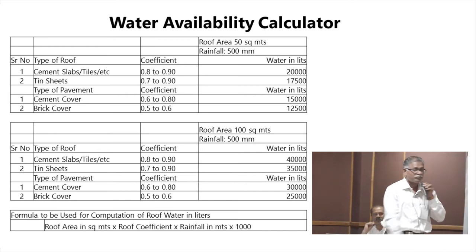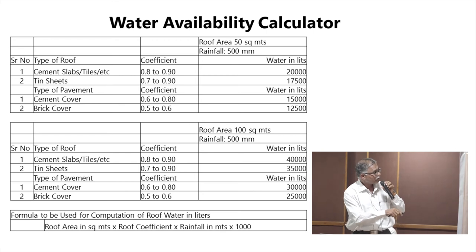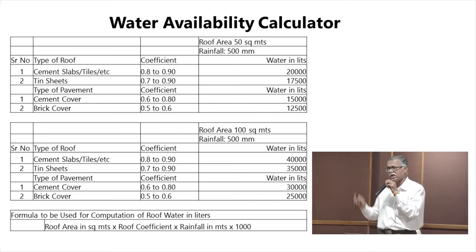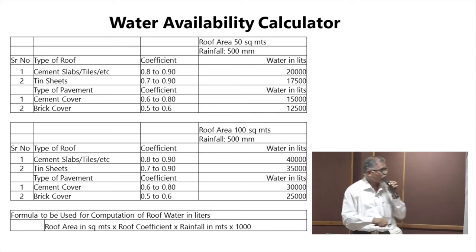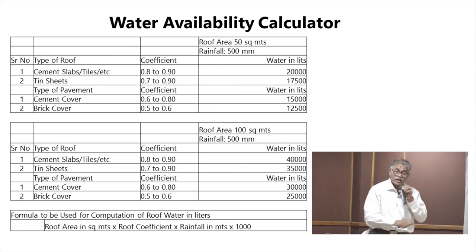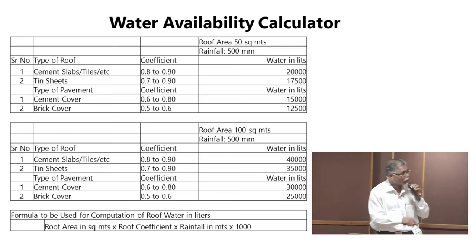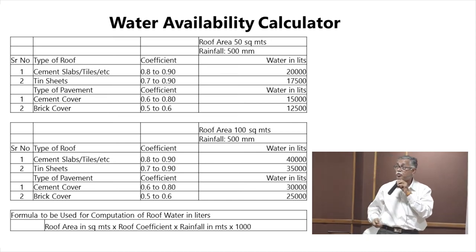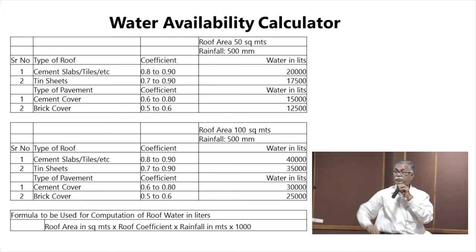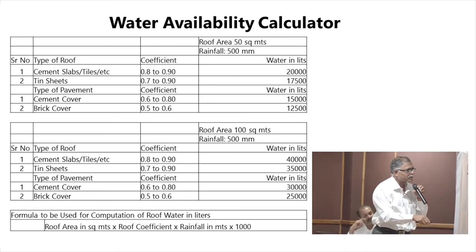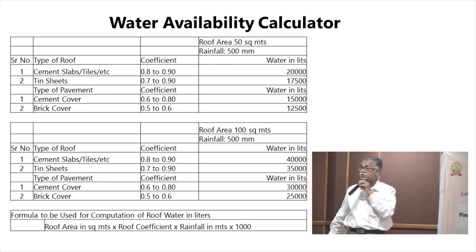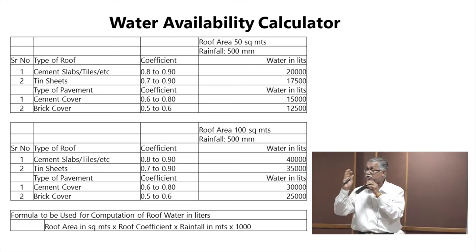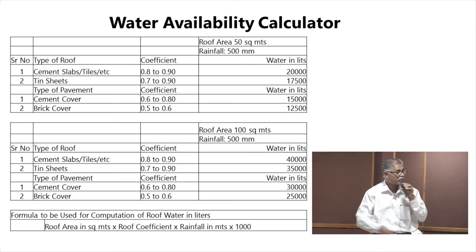If I take this rooftop area as 50 square meters, with different runoff coefficients — suppose it is a cement slab — then I am going to get 20,000 liters of water. This is a very small exercise you can also do. That water we can use for artificial recharge, but of course due care has to be taken while implementing these measures of artificial recharge.